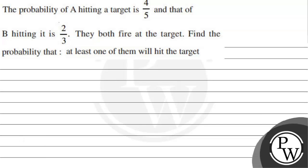Hello, let's read the question. The probability of A hitting a target is 4 by 5 and that of B hitting it is 2 by 3. They both fire at the target. Find the probability that at least one of them will hit the target.